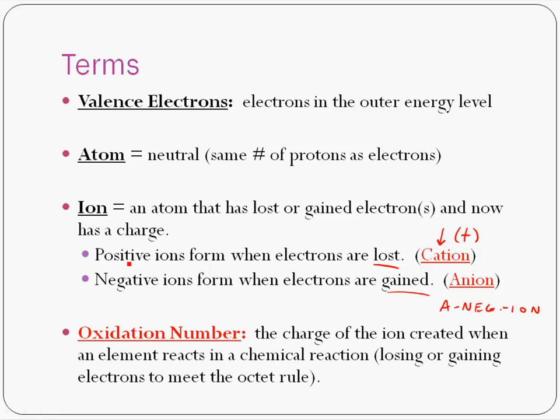And another term that's interrelated with ions is called oxidation number. And that's when an atom gets together with another atom and either loses or gains electrons. It's going to have a charge associated with it. And typically when it's in a compound, we talk about it in terms of oxidation numbers, but we really don't need to go too far into that for this video.